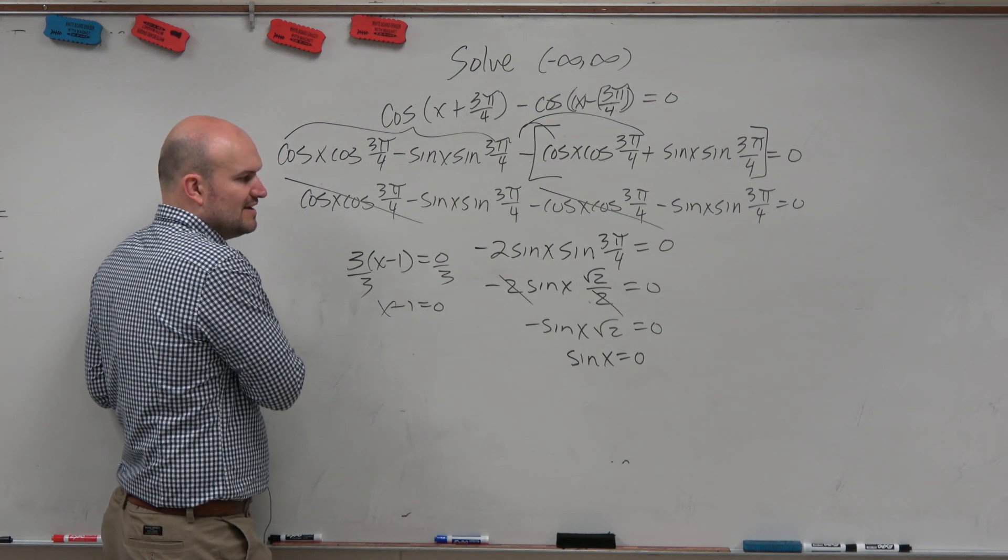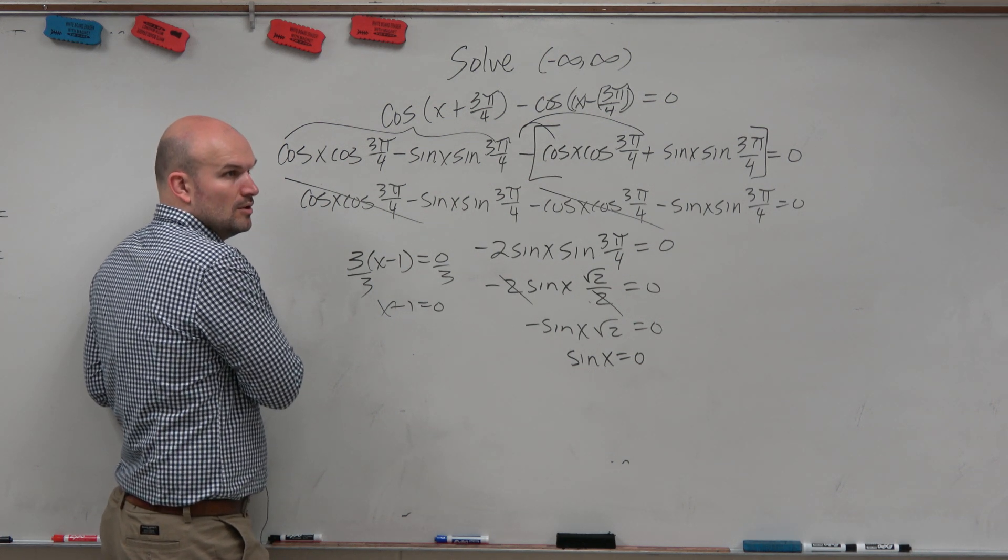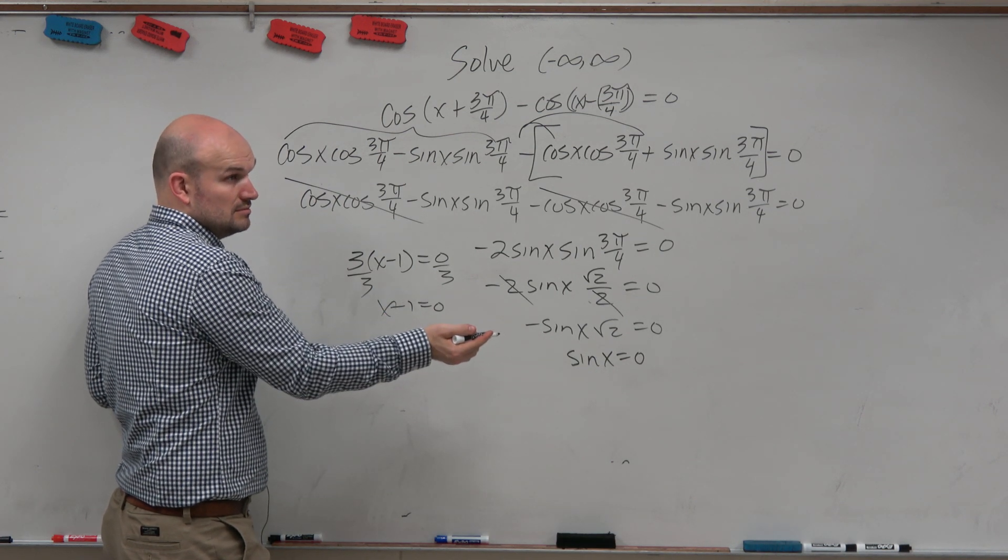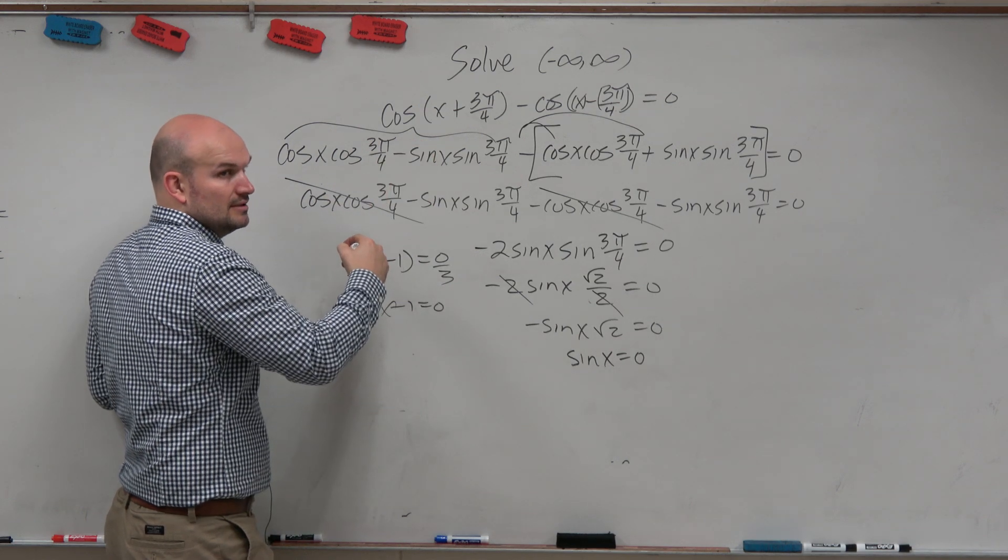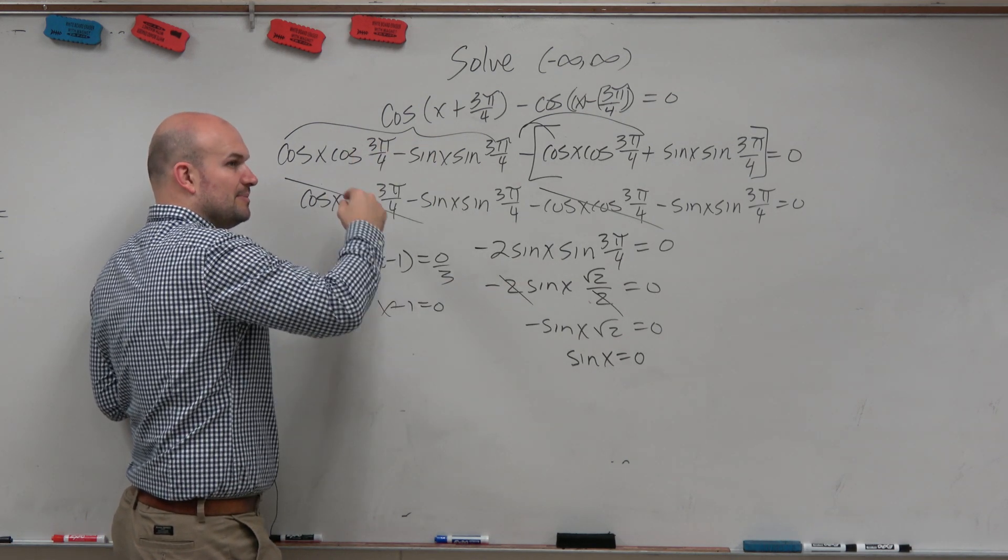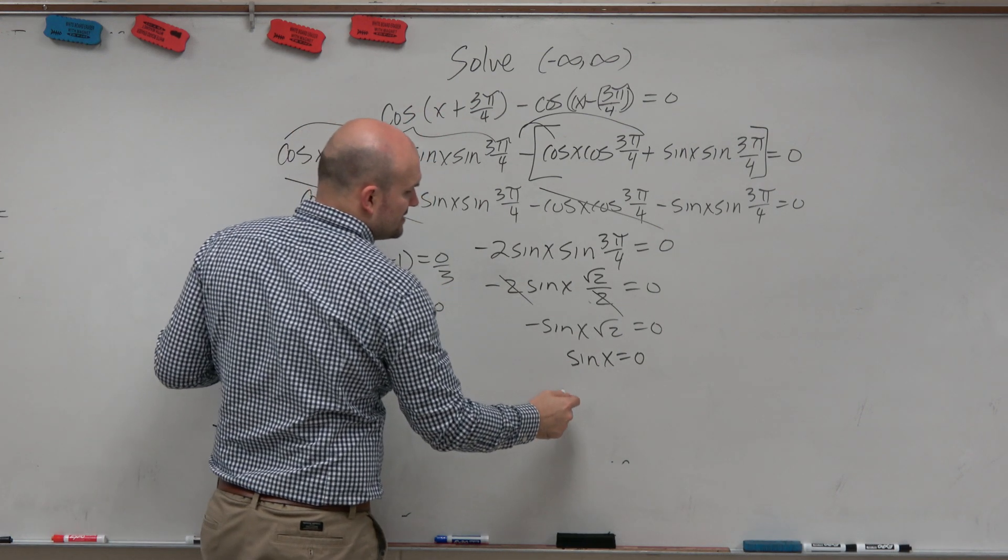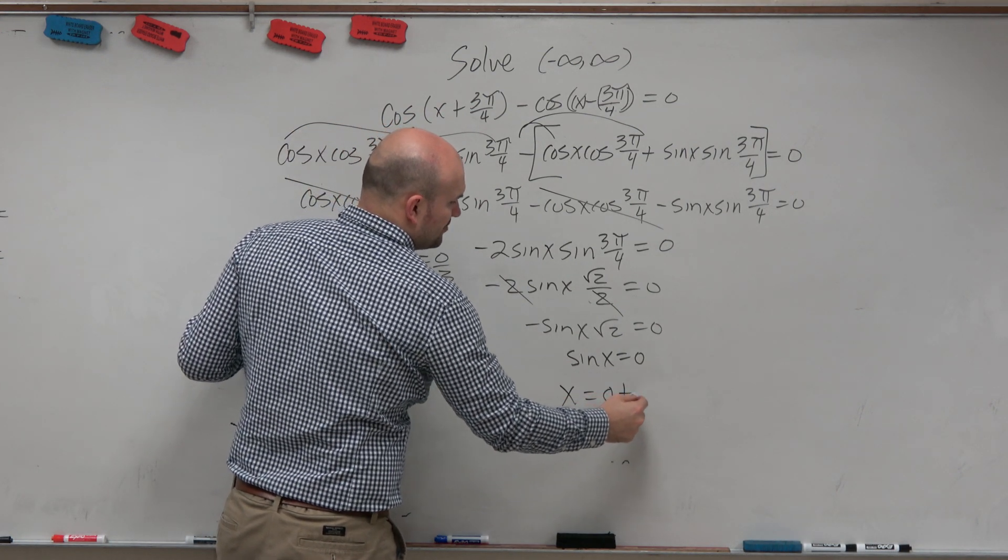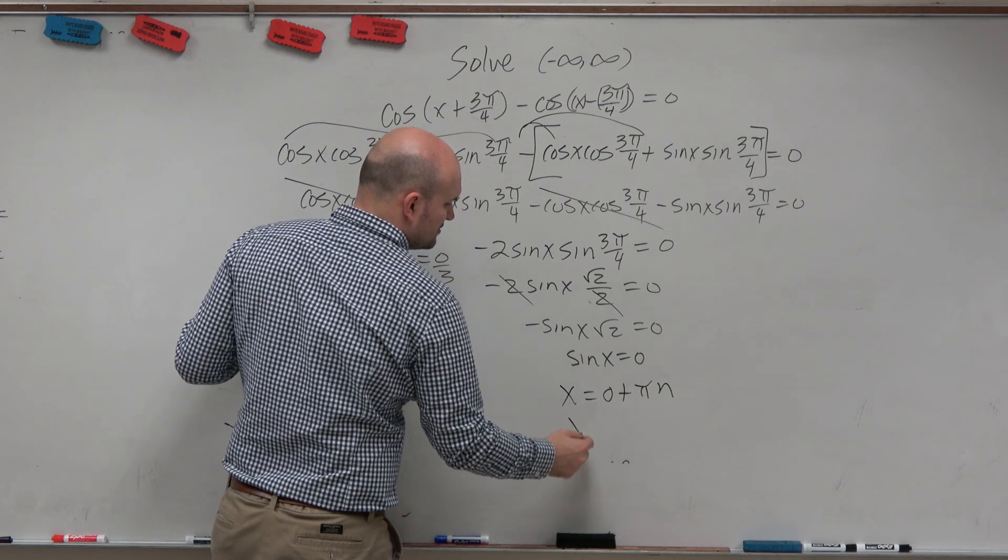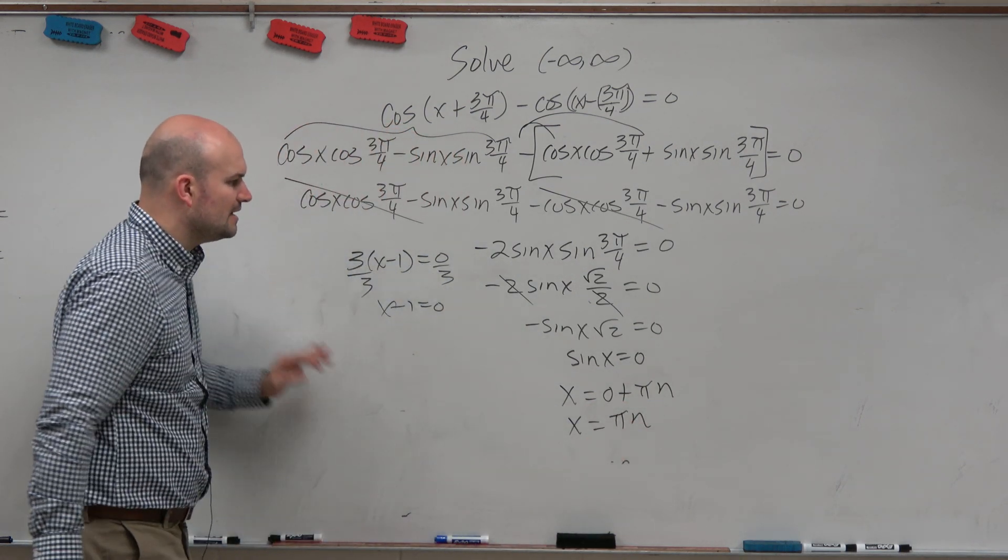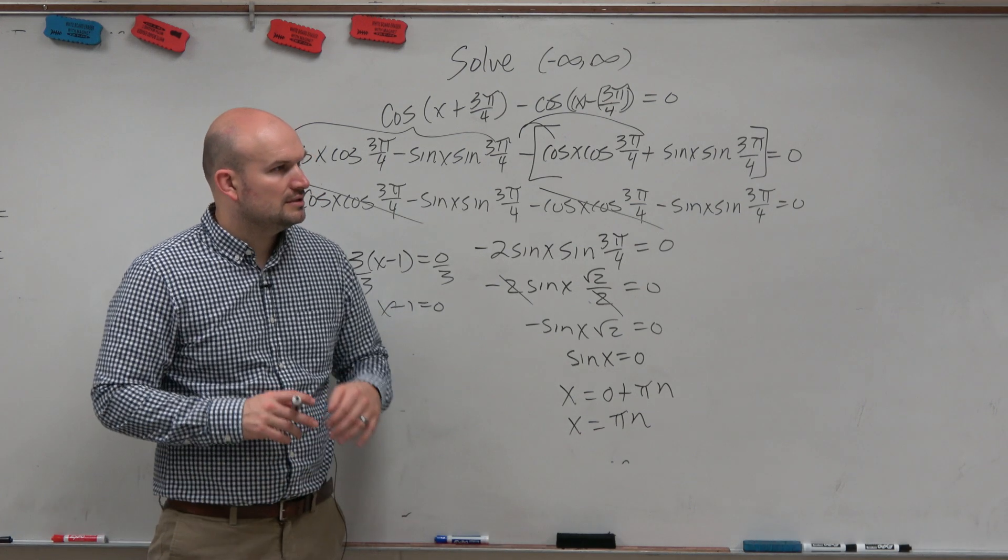So when is sine of x equal to 0? What angles? 0, and then π, and then 2π, and then 3π, and then 4π, and 5π. So we can write that as all solutions as x equals 0 plus πn, or just x equals πn. And that will satisfy all of our angles.